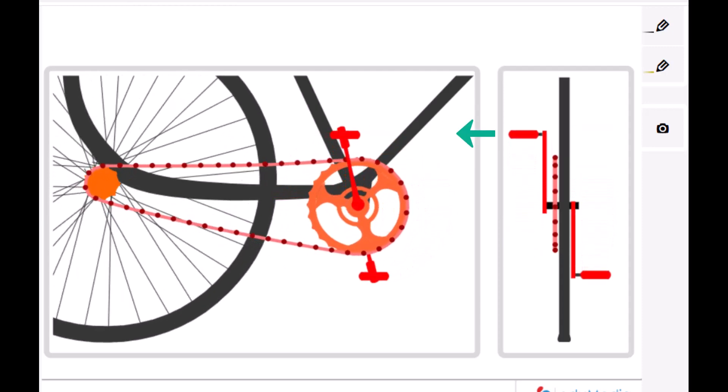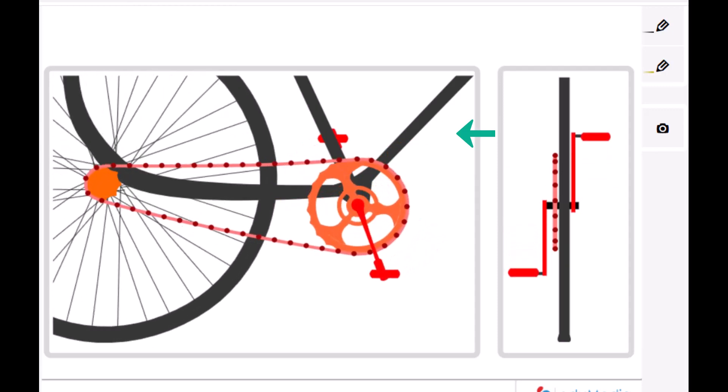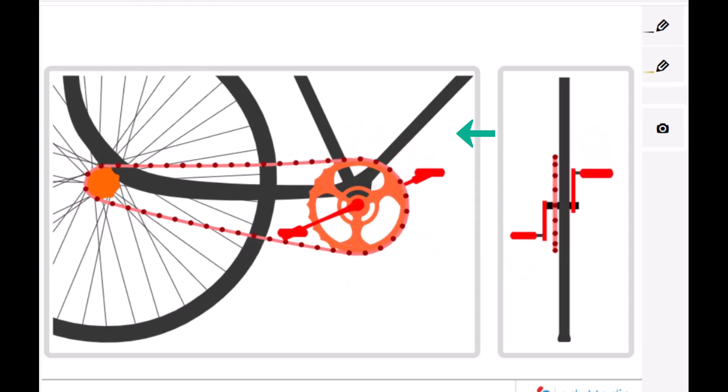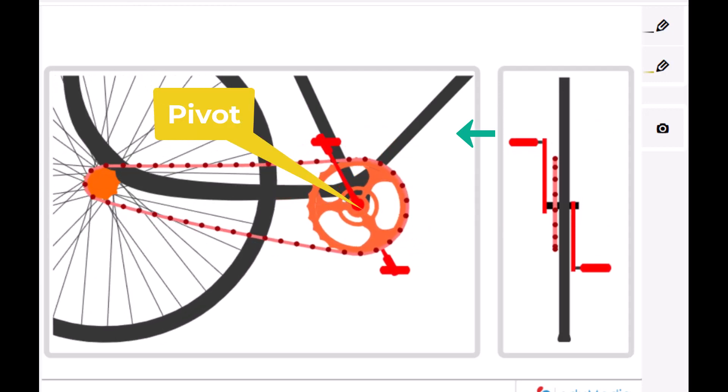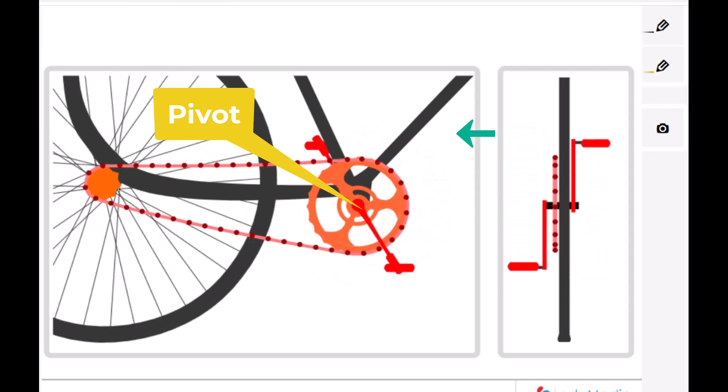Notice that to cause the rotation, the force on the pedal is applied a distance away from the axis of rotation, which we call the pivot. The vector going from the pivot to the pedal is the lever arm.